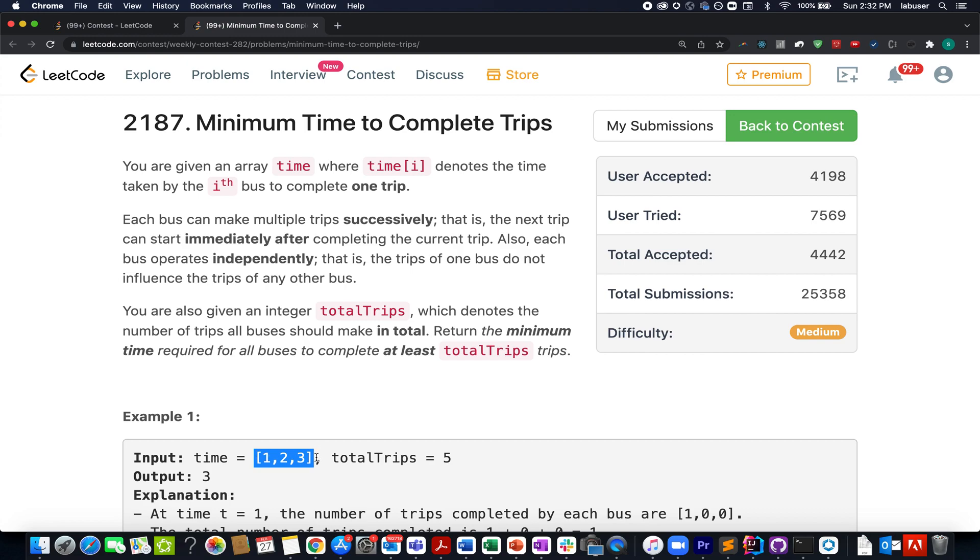That simply means that in totality among all these buses, the total trips that are to be completed are five. The trip time for the first bus happens to be one unit, second bus happens to be two units, third bus happens to be three units. What do we need to do? We need to identify that particular time for which the total trips will be completed.